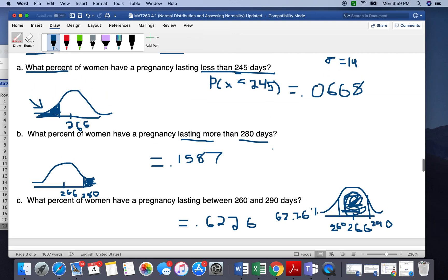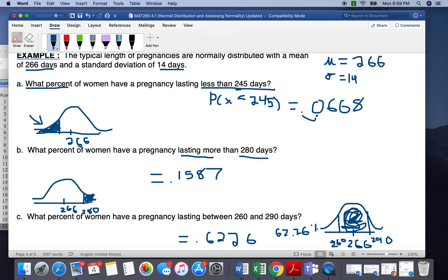I'm going to go ahead and change these percentages, since we're asking for percentages. So move the decimal place over twice. So 6.68%. And moving this one over two places gives us 15.87%.